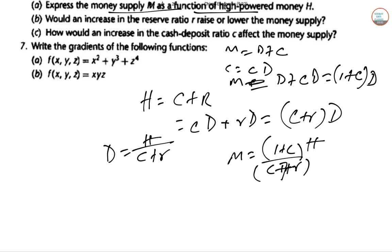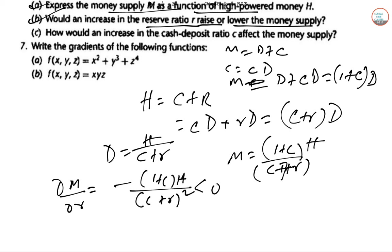Next part: would an increase in the reserve ratio lower the money supply? This we need to do del M by del R. Del M by del R, so minus (1 plus C) into H and (C plus R) squared. So this is negative, so if R lowers M.